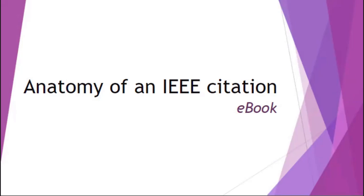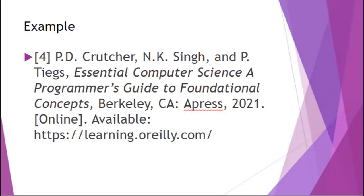The next citation we want to show you is how to cite an e-book — an electronic book — in IEEE citation format. For an e-book, you include the footnote in brackets, the authors in IEEE format, and then the title of the book in italics. After the title comes the city and state of the publisher — in this case, Berkeley, California — followed by a colon and then the name of the press and the year published, which in this case is 2021. Since this is an e-book, after the date you include [Online] in brackets to indicate it is an electronic book, and then provide the URL where readers can access it.